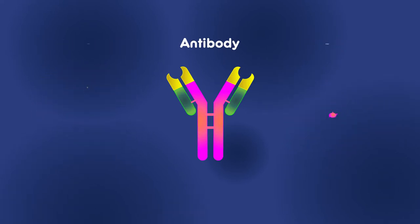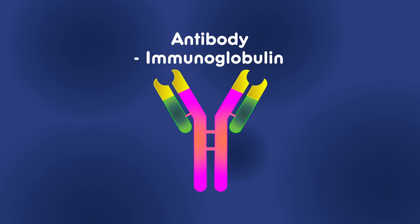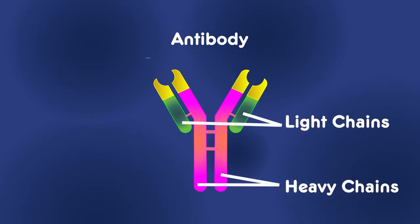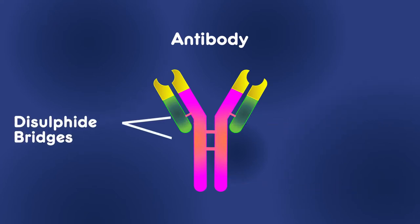Antibodies are also known as immunoglobulin. They are generally a Y-shaped protein consisting of four polypeptides: two identical light chains and two identical heavy chains. The terms light and heavy simply mean larger and smaller. The four polypeptide chains are connected by disulfide bridges.